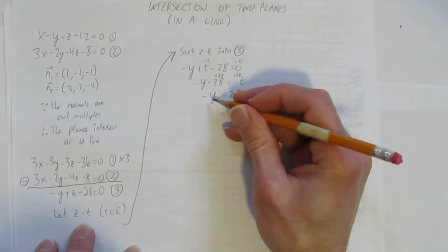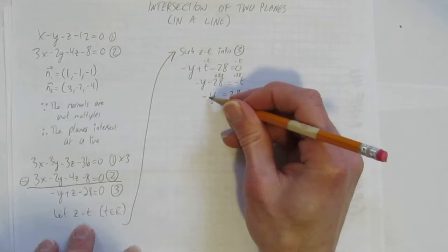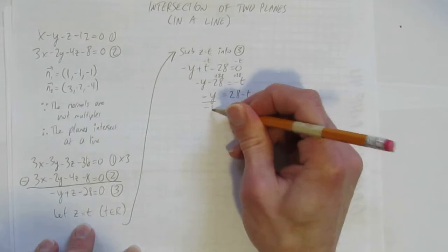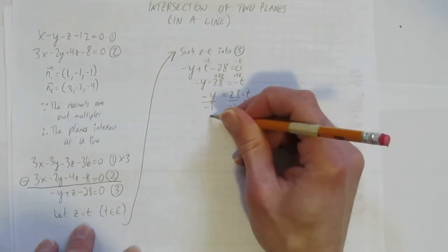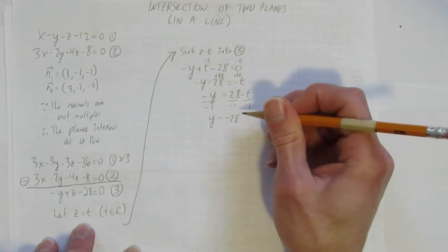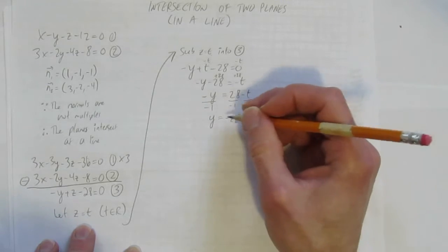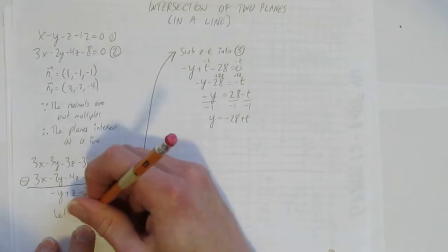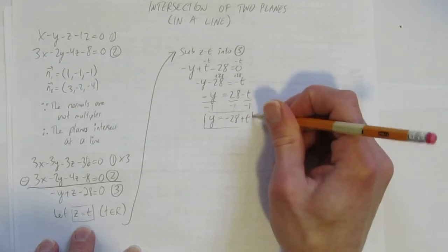That gives me just negative y on this side. On the right-hand side, I'll put the 28 first because parametric equations, the number comes first. So you get 28 minus t. And so finally, I want to get y by itself, but it has a negative or a negative 1 in front. What's the opposite of times negative 1? Divide by negative 1. So I'm going to divide each thing by negative 1 so that this solves for y. And I'm left with negative 28 plus t. I've got my second parametric equation. I've got my z. And I've got my y. I just need to solve for x.